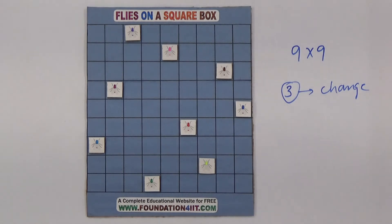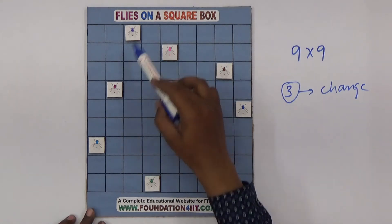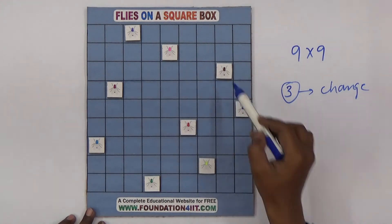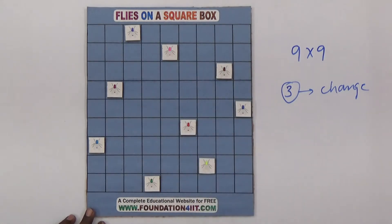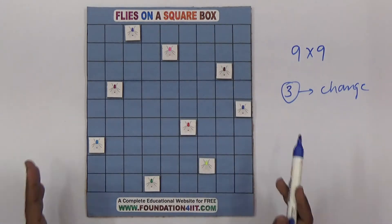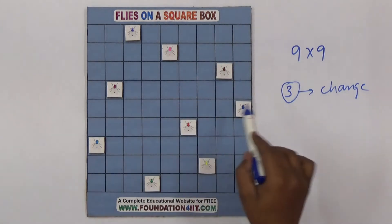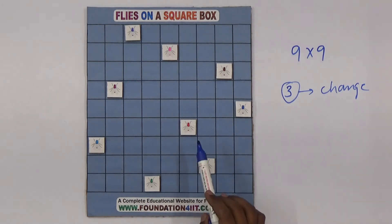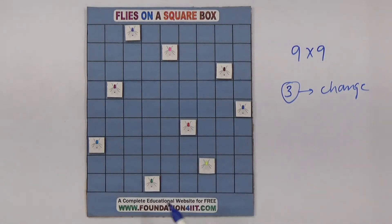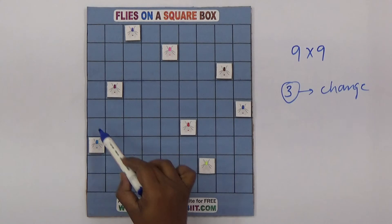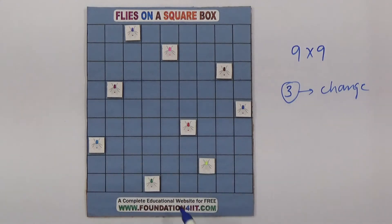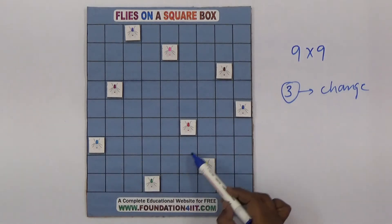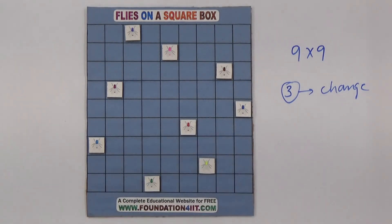Let me show you the solution. One, two, three, four, five, six — the top six positions satisfy the rules so far: rows, columns, and diagonals, with no flies matching each other. Observe that this diagonal has nothing, this diagonal also has nothing, and the rows and columns are clear too.